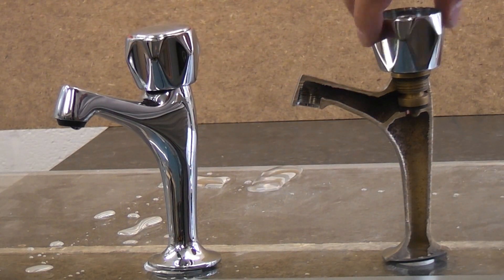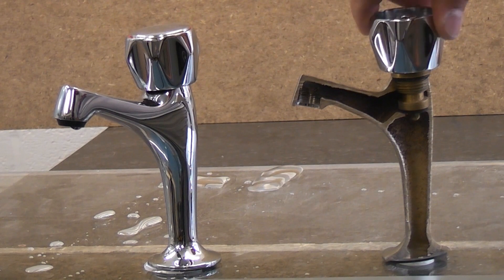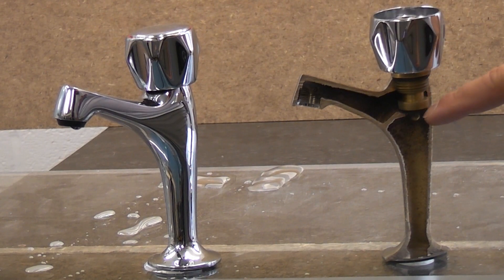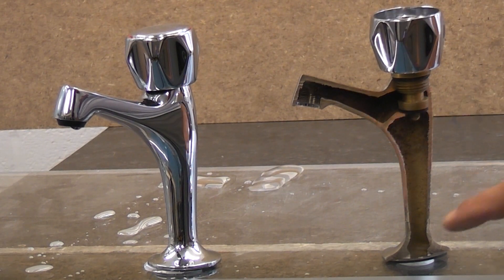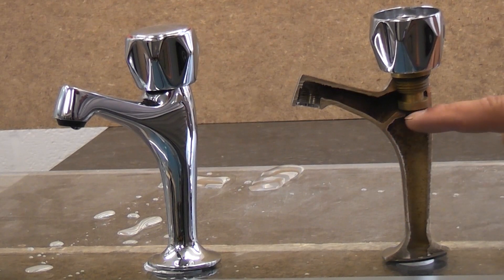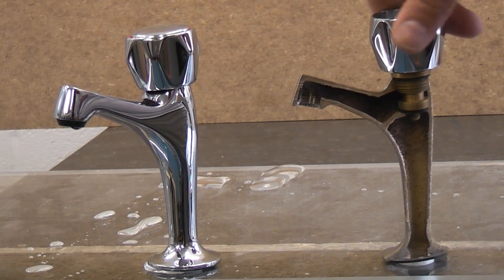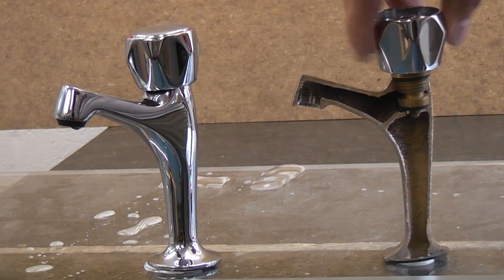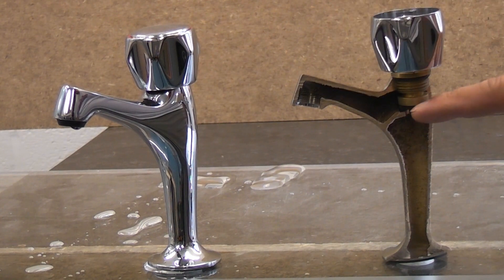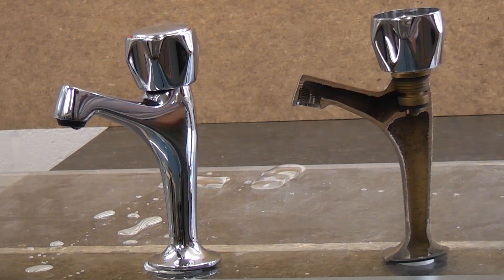To close the tap you turn it in a clockwise direction and that will push the sealing washer down onto the seat. Then any water trapped in there can't go any further. It will be stopped in that position until you open the tap again, which lifts the washer off its seat allowing the liquid to flow.